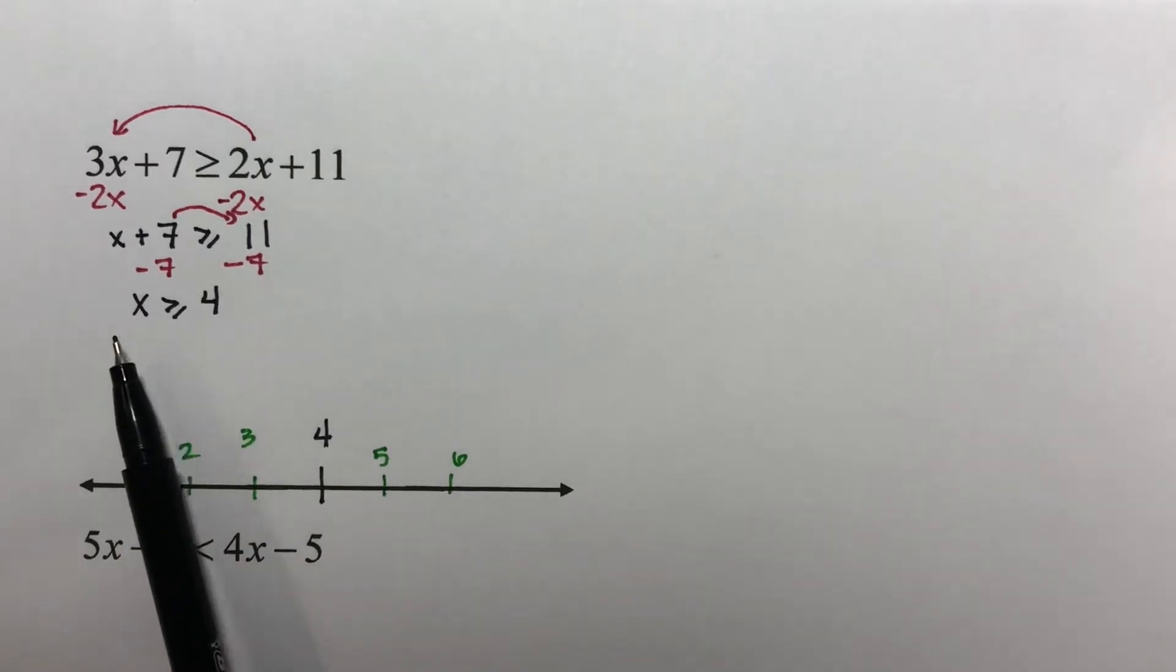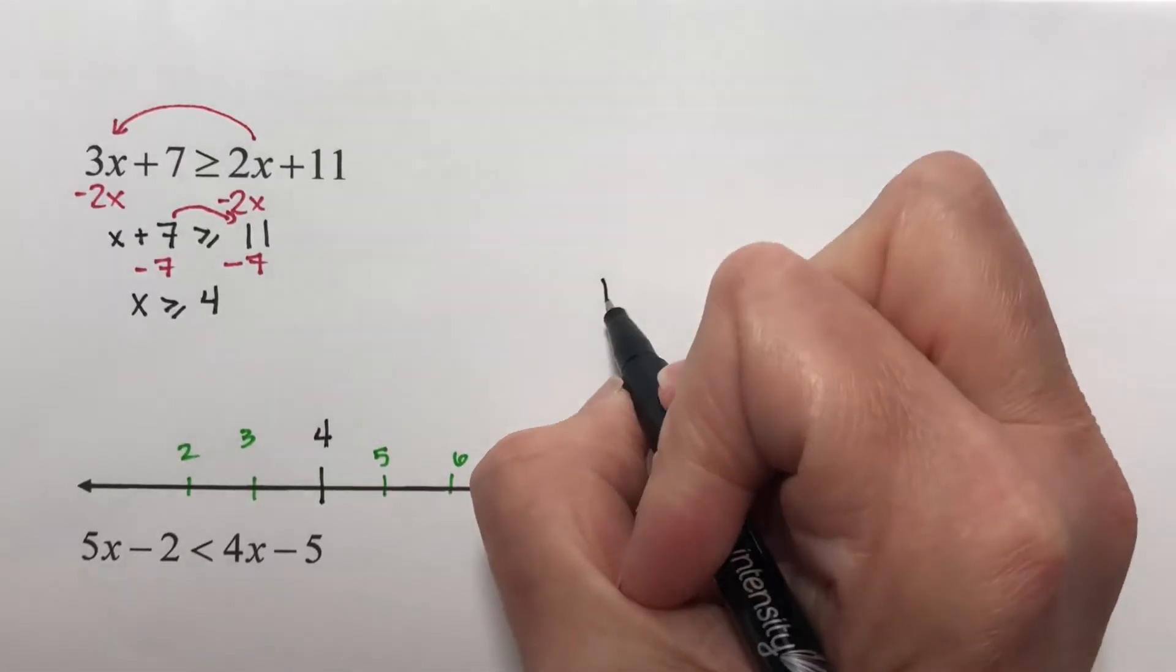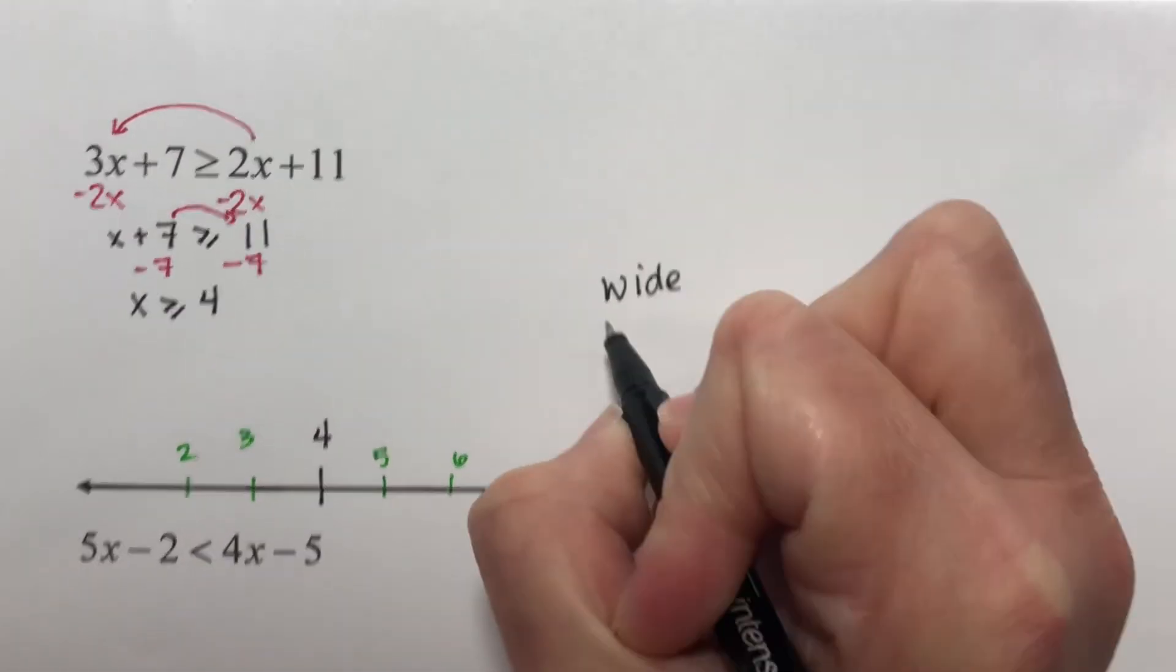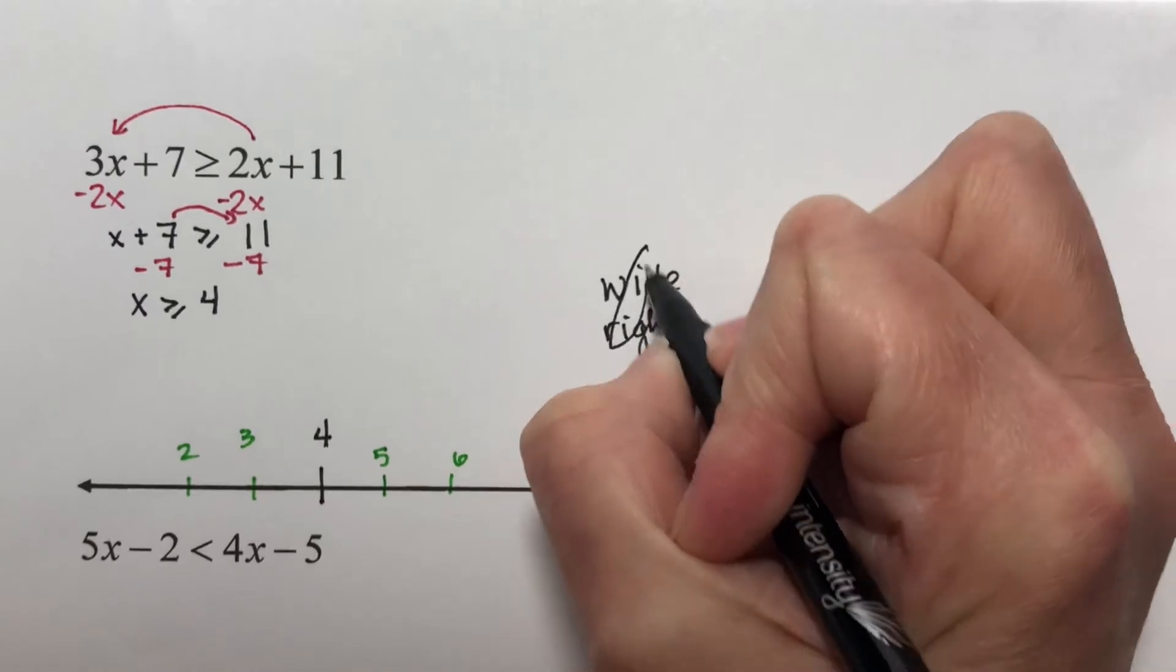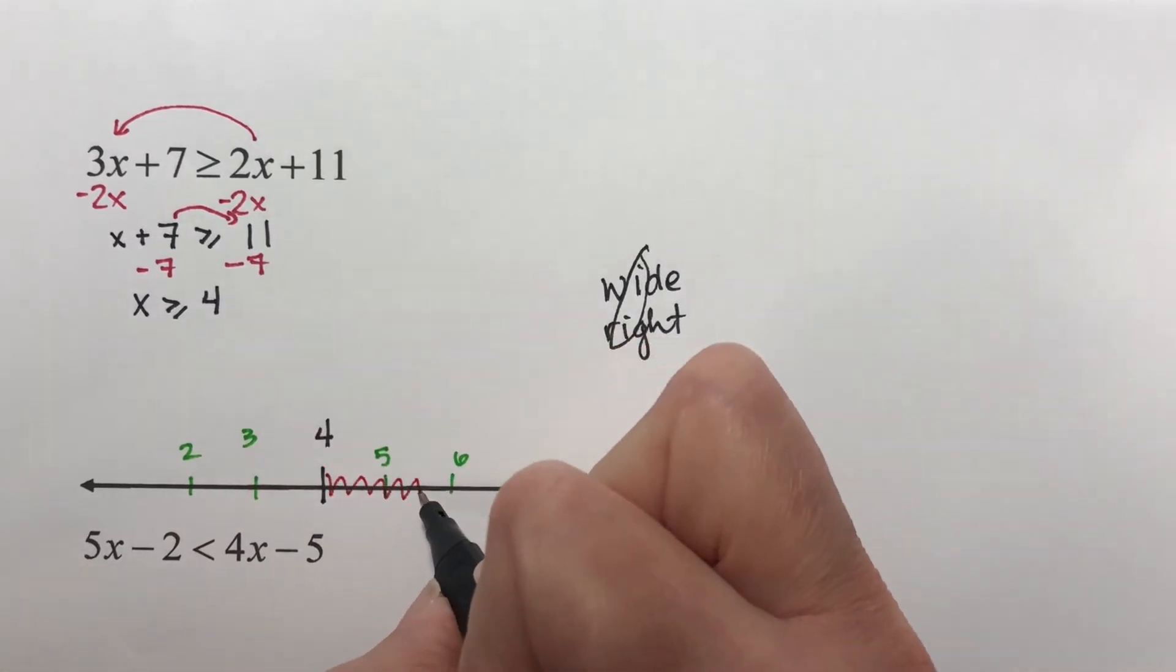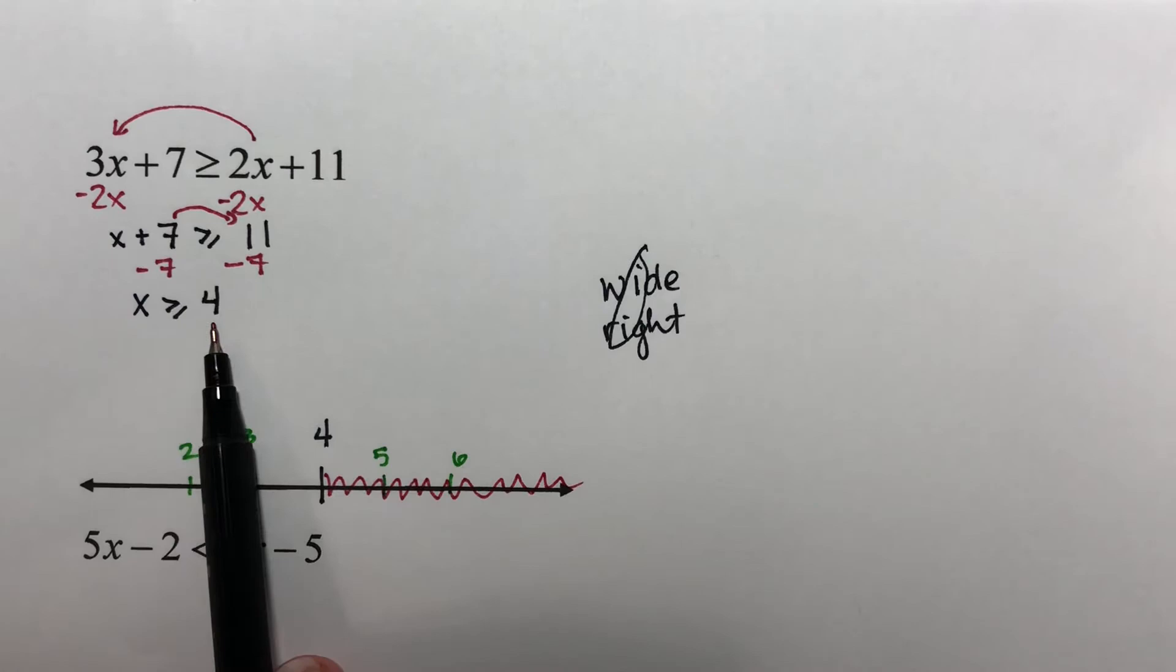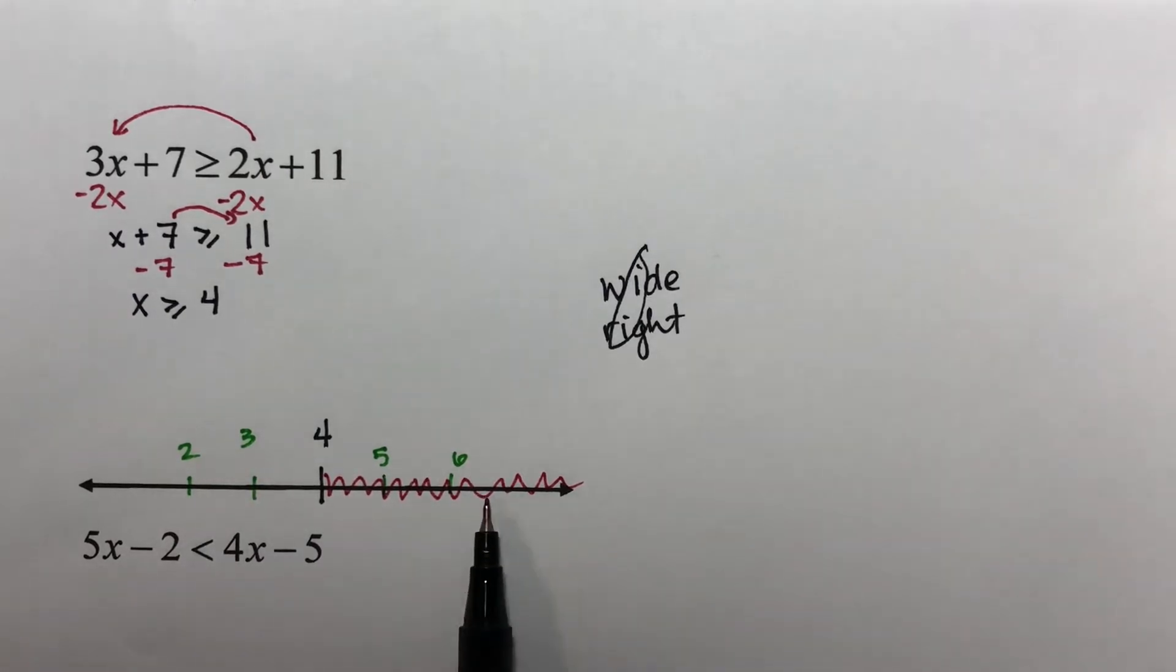My variable, you look what side it's on. It's on the wide side. Remember, wide and right. They both have i's in there. So I'm going to shade on the right-hand side of this 4. Or you can look at the numbers. 5 is greater than 4, so I shade towards 5. 6 is greater than 4, so I shade towards 6.